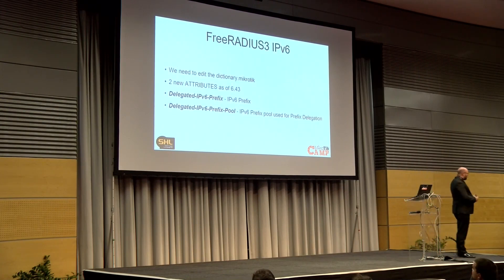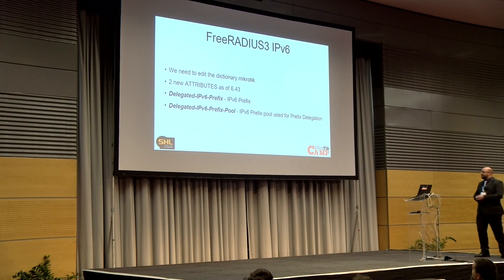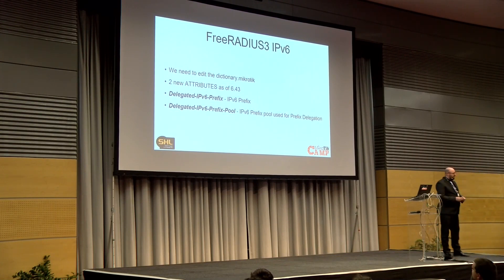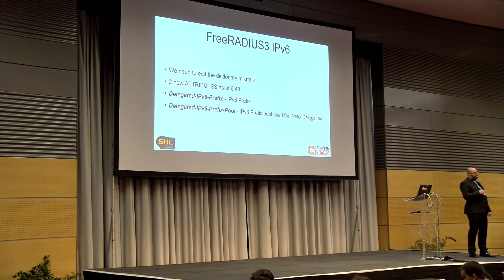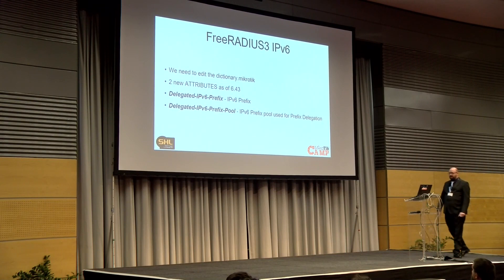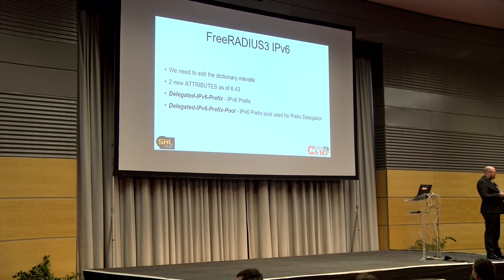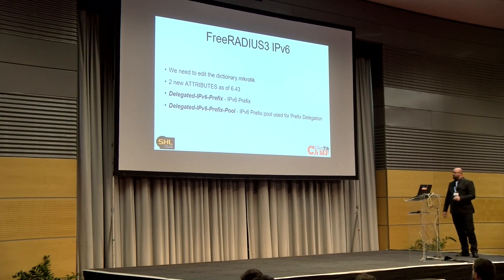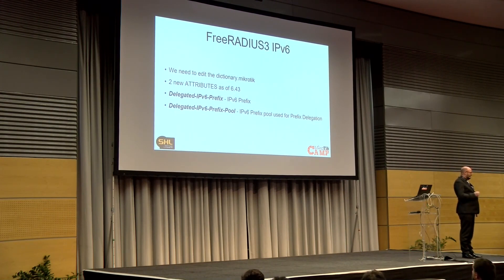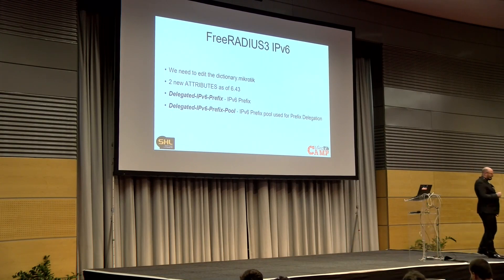When it comes to IPv6 and FreeRADIUS, MikroTik has actually edited their dictionary files for FreeRADIUS. Dictionary files are more or less a compilation of how RouterOS is using RADIUS. Also from 6.43, they've added a couple of new extension attributes: Delegated-IPv6-Prefix — that's the prefix we're going to send out, /64 or whatever you want — or Delegated-IPv6-Pool, which is the name of the pool you're going to use on the router. In this case, I've called it pool one in this lab.